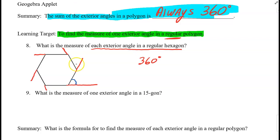So I want to find the measure of one of the blue exterior angles. Well there are six of those because a hexagon has six sides, so I would divide by six and I would get 60 degrees.